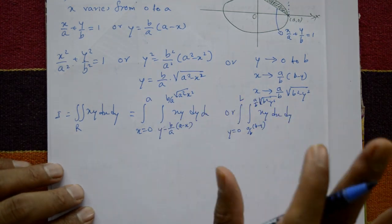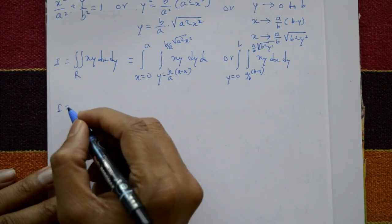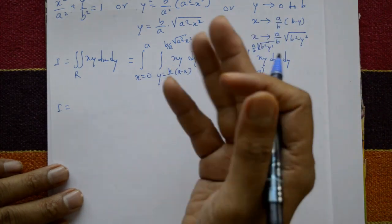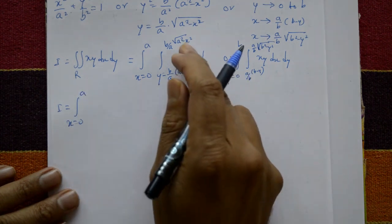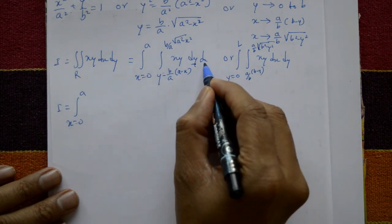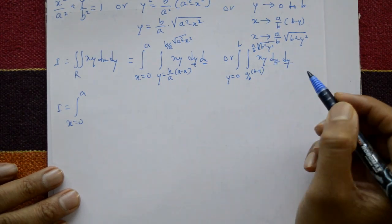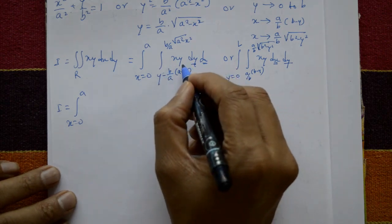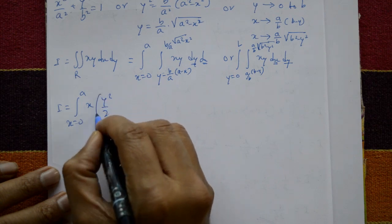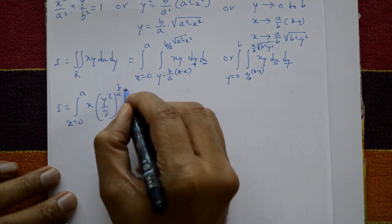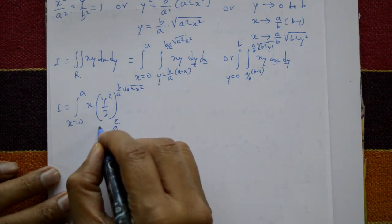Taking any one gives the same result. I = ∫₀ᵃ [∫ xy dy] dx — integrating with respect to y first, treating x as a constant. The integral of y is y²/2, so we evaluate [x · y²/2] from the lower limit b/a·(a−x) to the upper limit b/a·√(a²−x²).